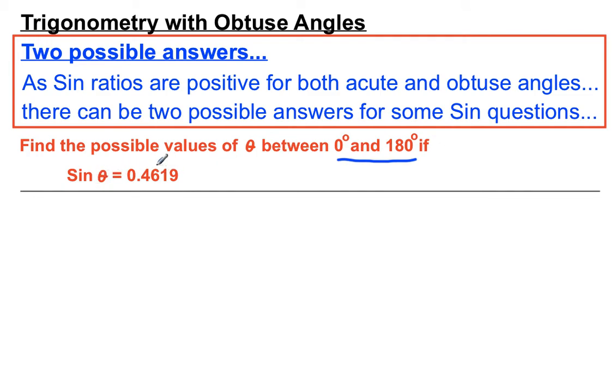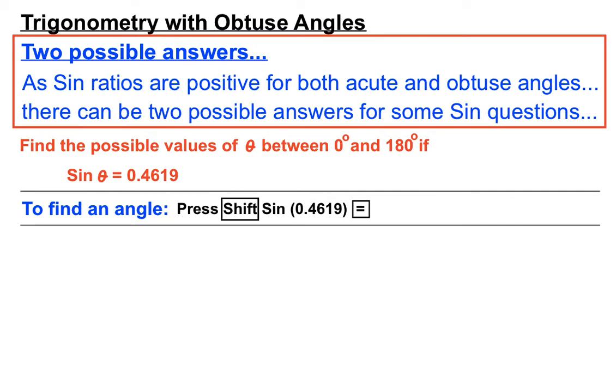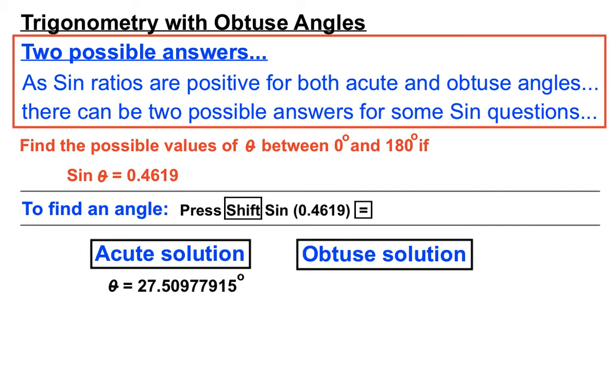If sine theta equals 0.4619. We'd find an angle by pressing shift, sine, and typing that 0.4619 in and pressing equals. We get a normal answer there of 27.5 degrees, roughly. But we'll have to remember that this question is asking us for not just an acute answer, but an obtuse answer is also possible as well, because that positive result for sine can apply to acute angles and obtuse angles. This really only crops up for sine ratios, because sine is the only one that's positive for acute and obtuse angles.